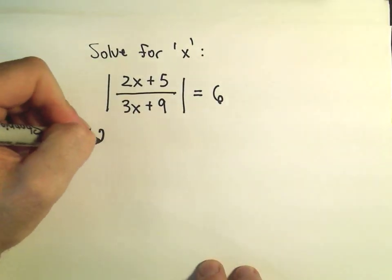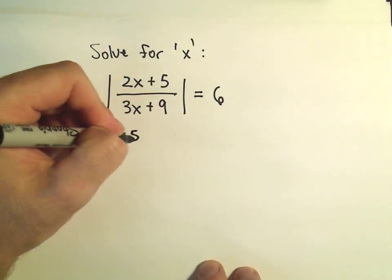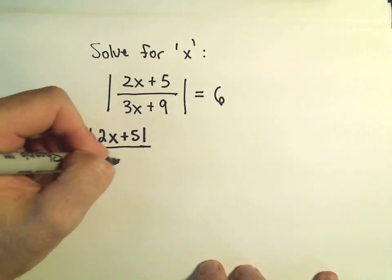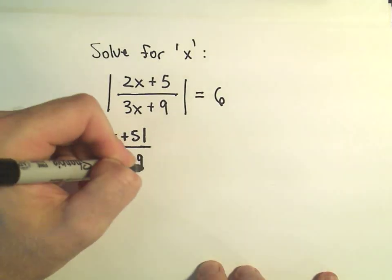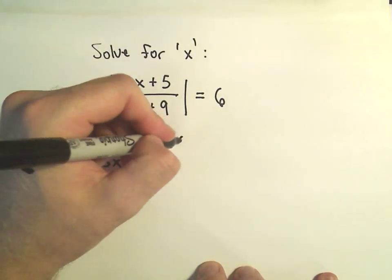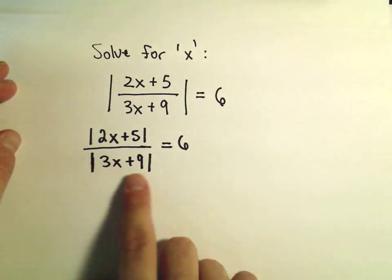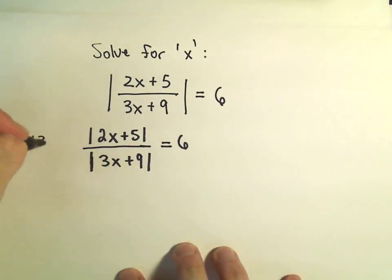we can break up this fraction on the left as the absolute value of 2x plus 5 over the absolute value of 3x plus 9 equals 6. What I'm going to do is multiply both sides by this absolute value of 3x plus 9.